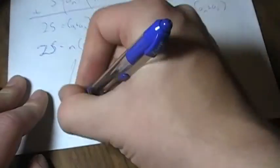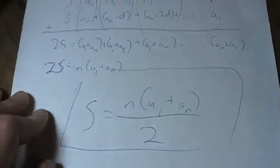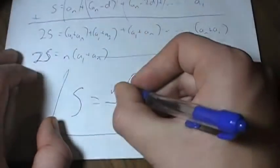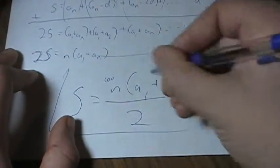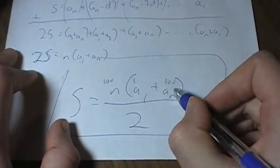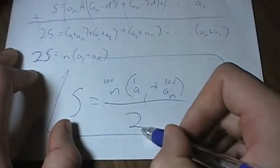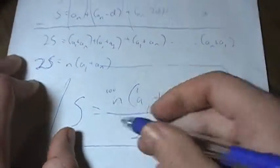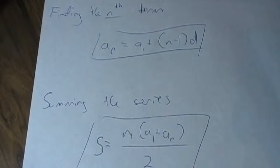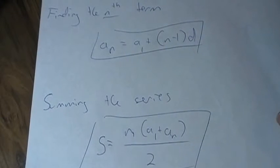You can do a quick check with the numbers 1 through 100. There are 100 terms, a sub 1 is 1, a sub n is 100, so 100 times (1 plus 100) divided by 2 equals 100 times 50.5, which is 5050. These are the two formulas you really want to know — probably want to commit them to memory: finding the nth term, and summing the series. Thank you for watching.